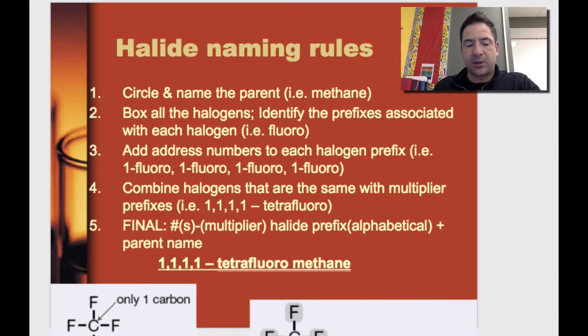So the next thing we'll talk about here is the naming rule. First thing we're going to do is circle and name the parent chain. We want to make sure we circle the longest carbon chain and name that carbon based on our table of alkanes.